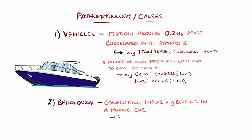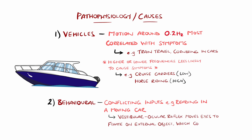The vestibulo-ocular reflex moves the eyes to maintain fixation on an external object that is moving relative to the head, which conflicts with fixating on the text which is stationary relative to the head, and doesn't need the same eye movement.